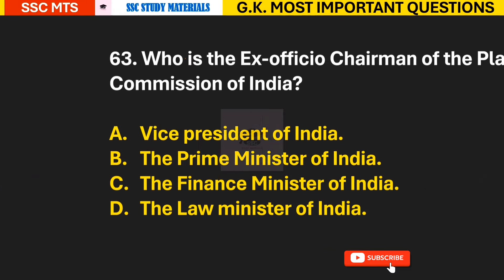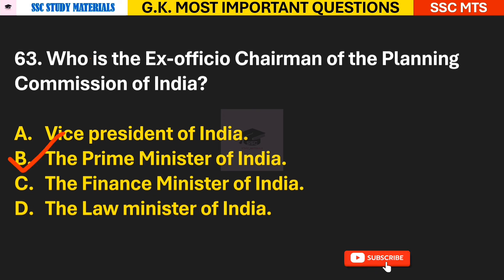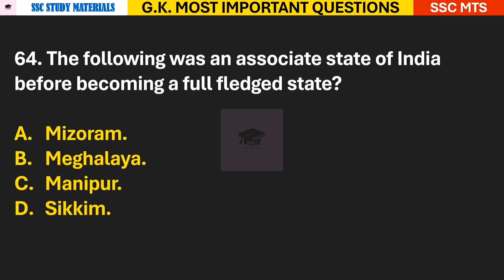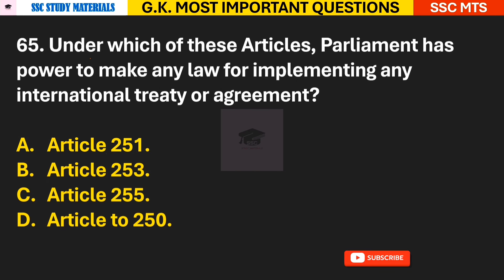Question 62: The Constitution of India recognizes which type of minorities? Answer C — the Constitution of India recognizes religious and linguistic minorities. Question 63: Who is the ex-officio chairman of the Planning Commission of India? Answer B — the Prime Minister of India. Question 64: Which of the following was an associate state of India before becoming a full-fledged state? Answer D — Sikkim.